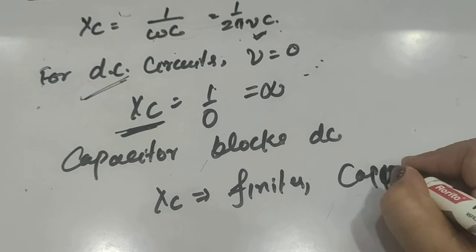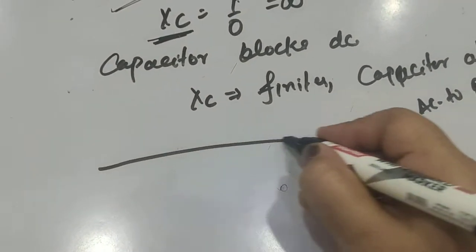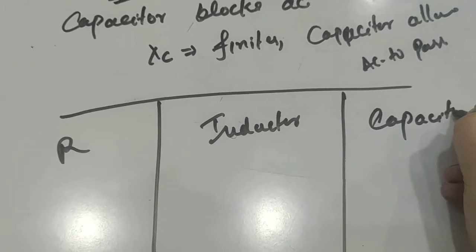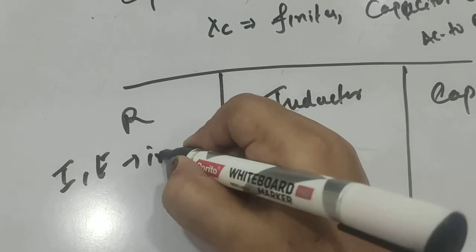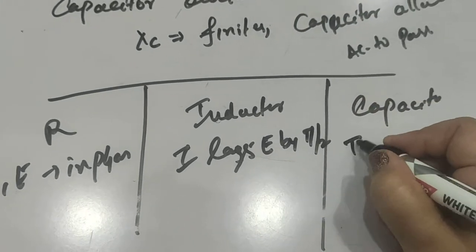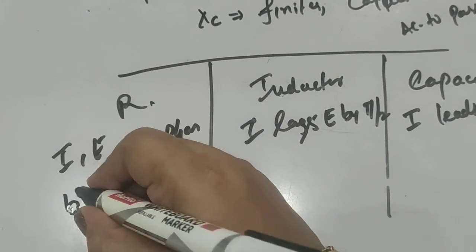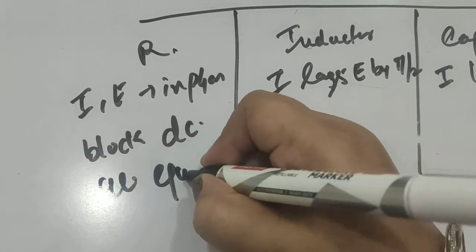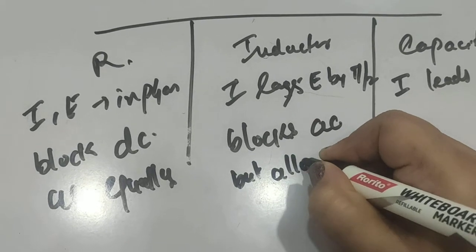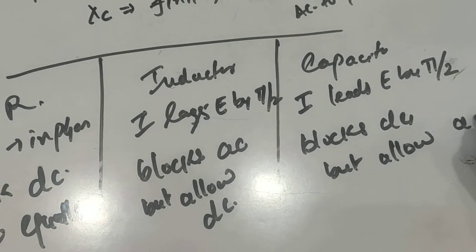So let me compare all three in a DC circuit: resistance, inductor, and capacitor. In that case, I and E in phase; I lags E by π/2; I leads E by π/2. And resistance allows AC and DC equally; inductor blocks DC but allows AC; capacitor blocks DC but allows AC. So this is all about the three components of the AC circuit.